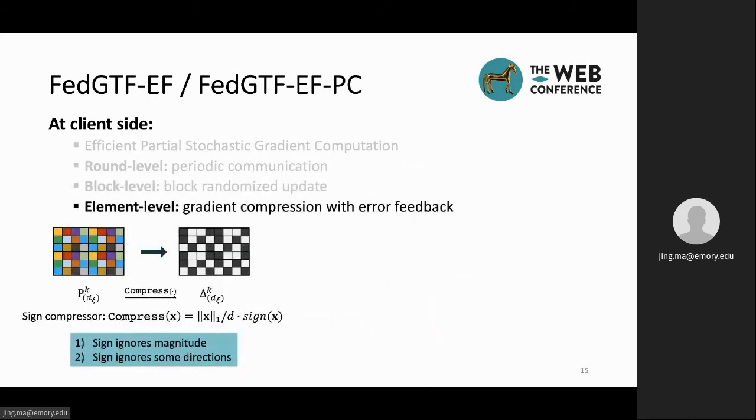Then, for every iteration, we use gradient compression to reduce the communication cost. We use a popular sign compressor to compress the gradient. However, sign compressor is a biased compressor, which could prevent the algorithm from converging, because it could ignore magnitude and some directions.